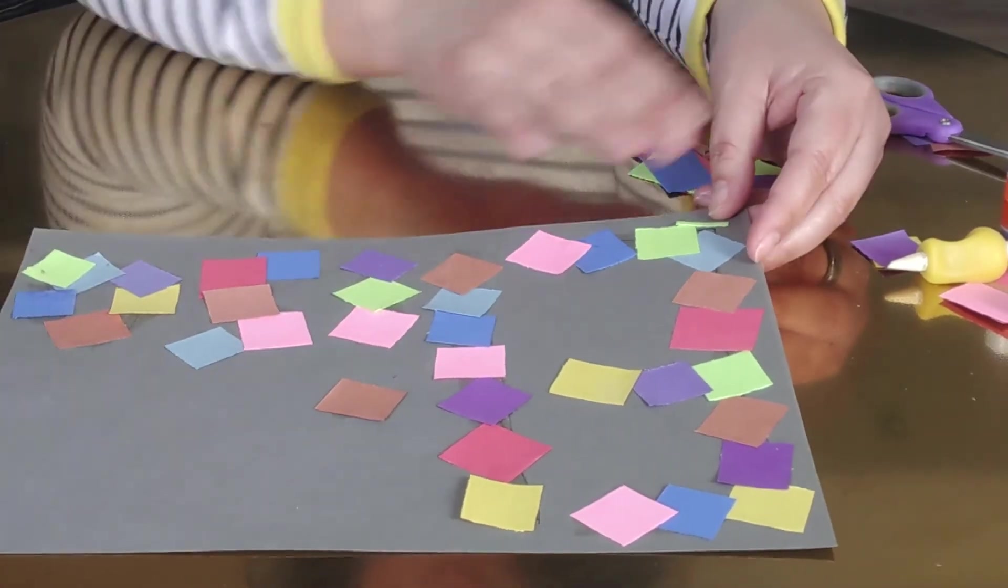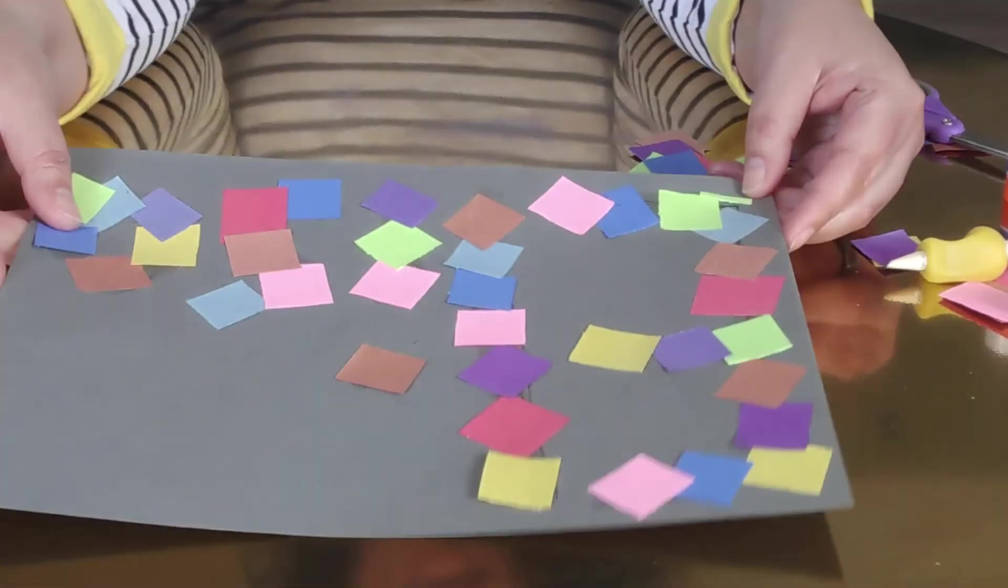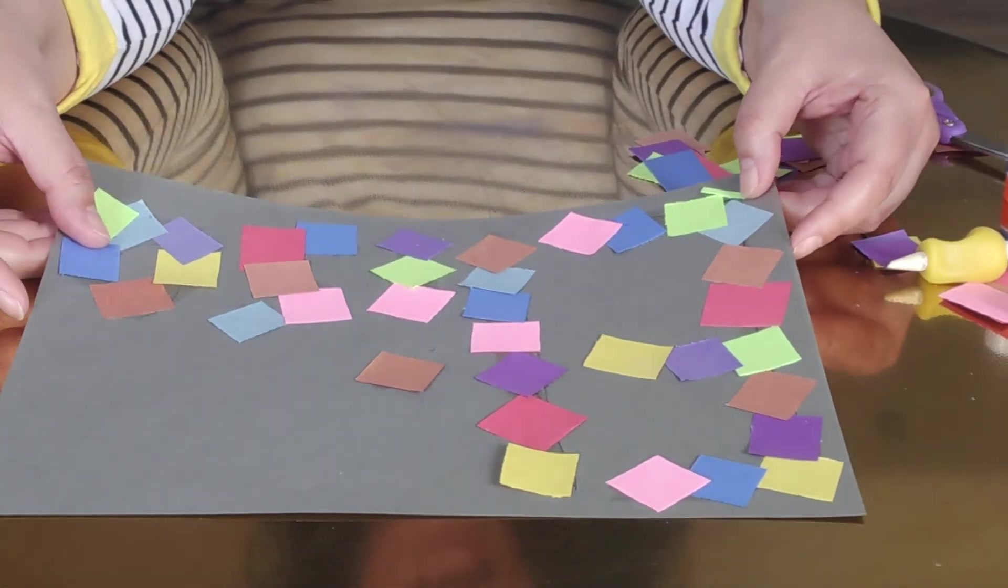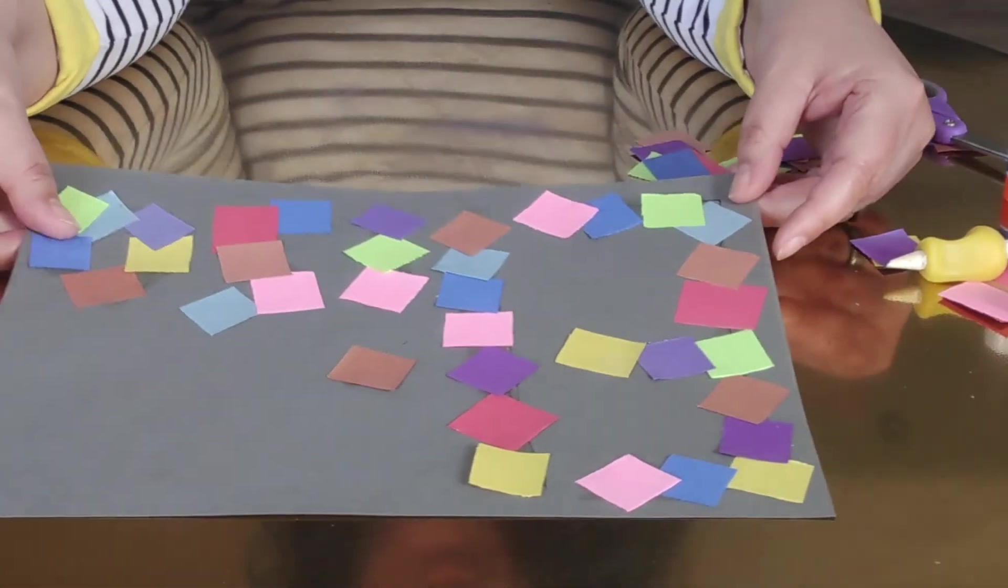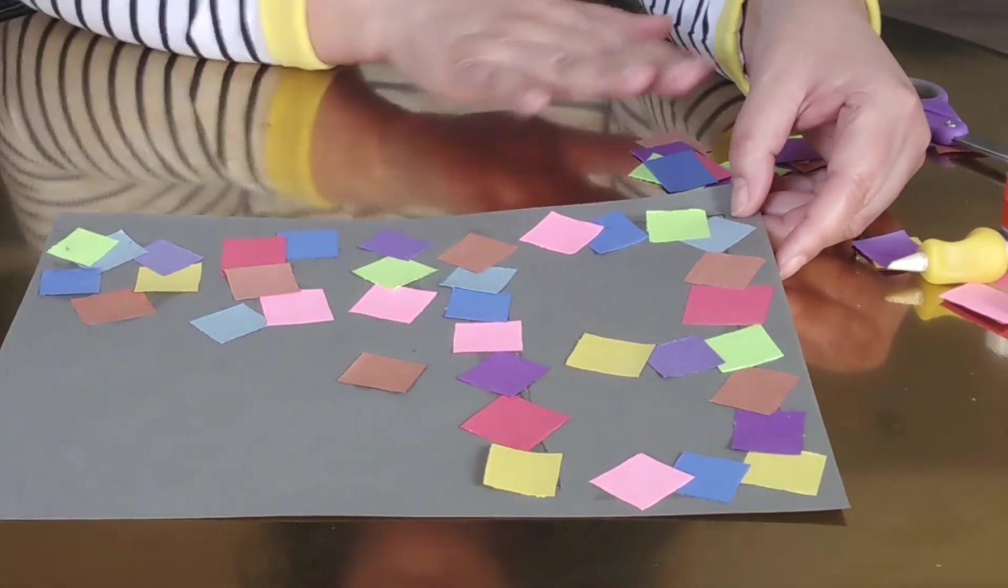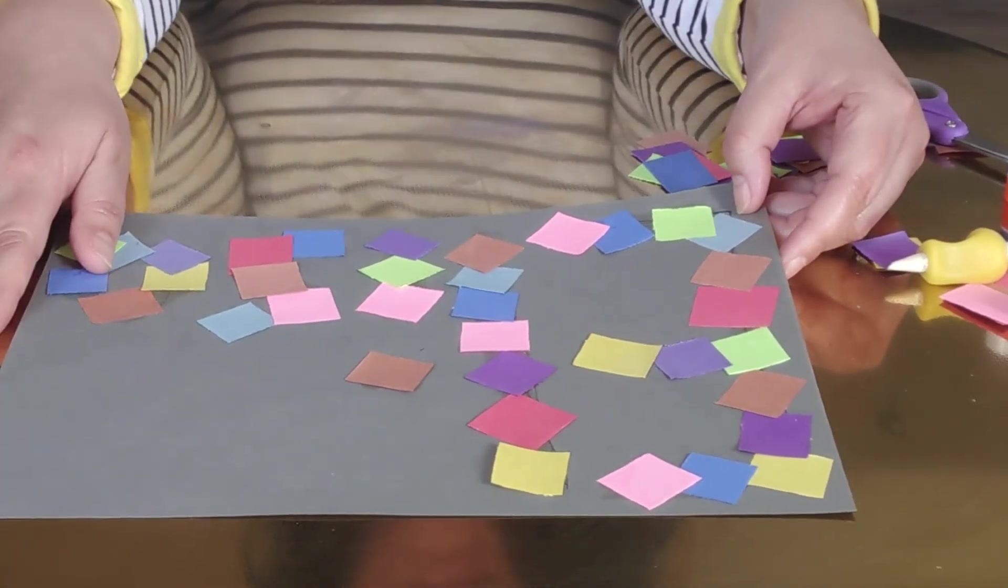So you can spread it out, and that way they can continue working on squares. And they won't become overwhelmed with just doing it straight through. If they can do it straight through, that would be great, but it's not necessary.